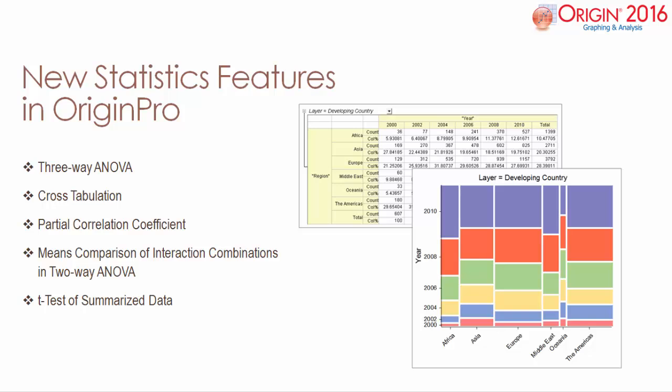Origin Pro contains several new statistics features, including three-way ANOVA, cross-tabulation and mosaic plots, partial correlation coefficients, means comparisons of interactive combinations in a two-way ANOVA, and t-tests of summarized data.